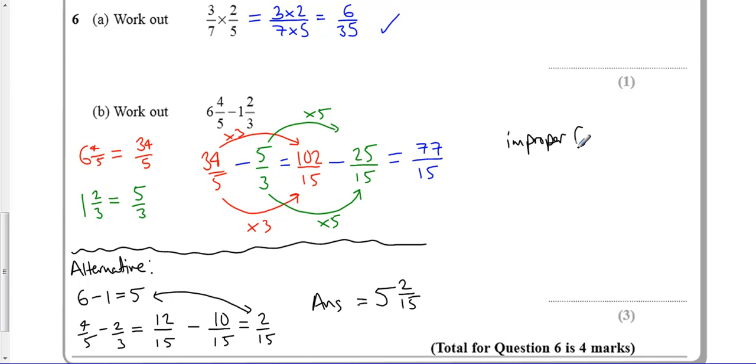But actually 5 and 2 fifteenths is a mixed number. If I turn it into an improper fraction which I've got here, I've got an improper fraction and because of that 5 fifteenths is 75 plus the 2 is 77 so it's the same.